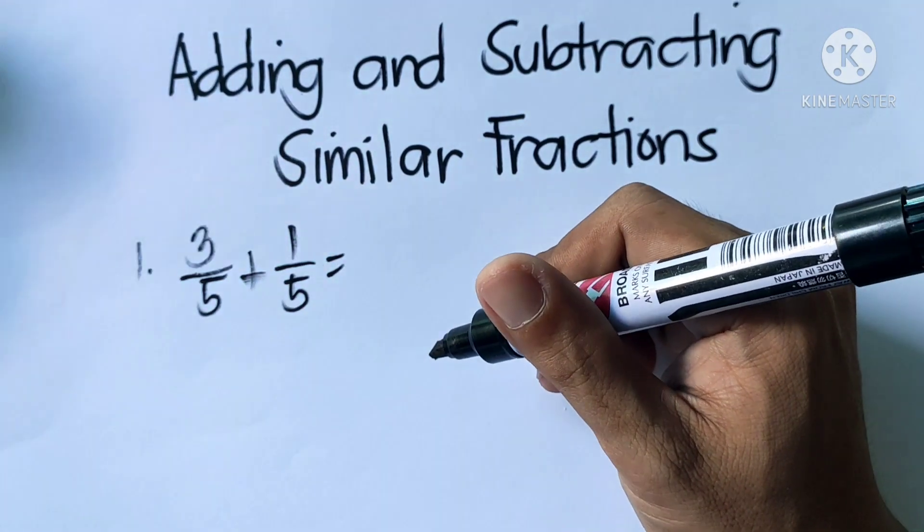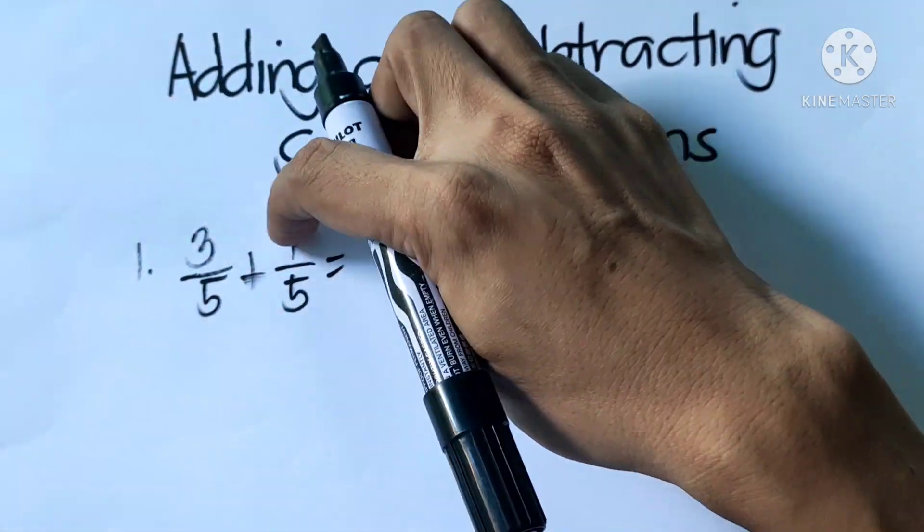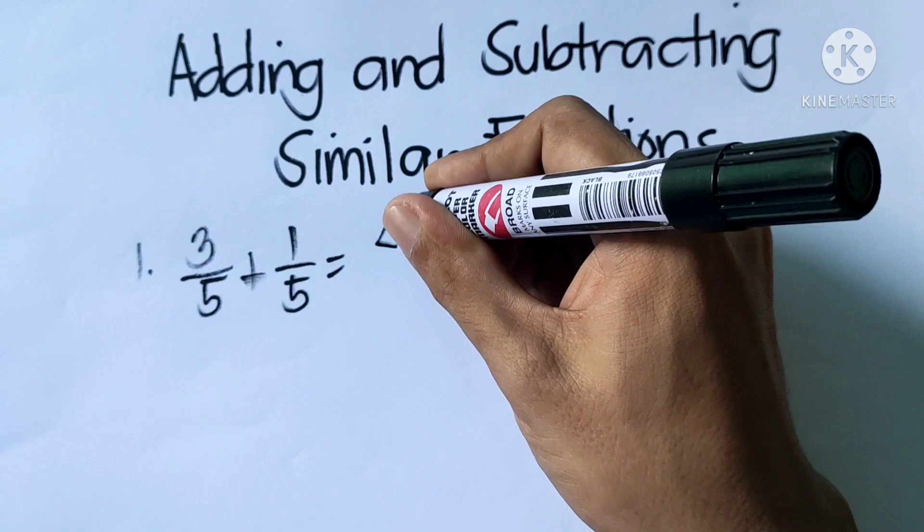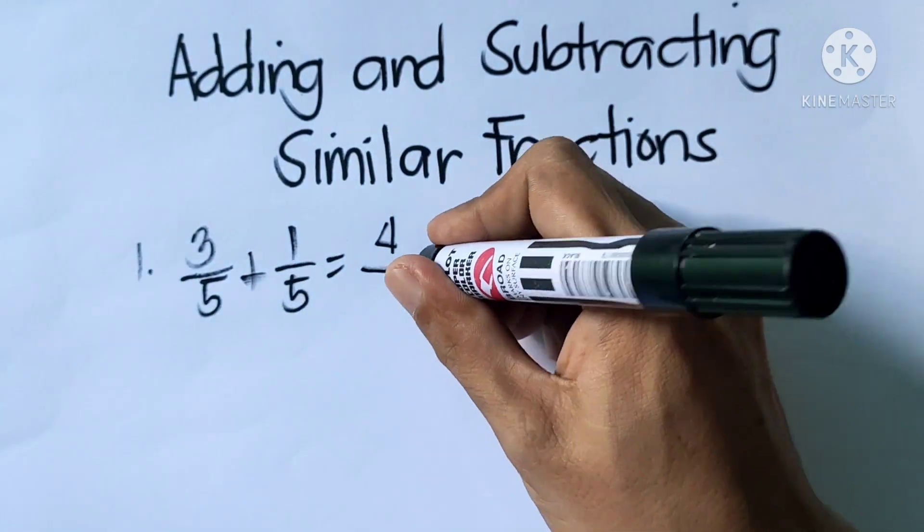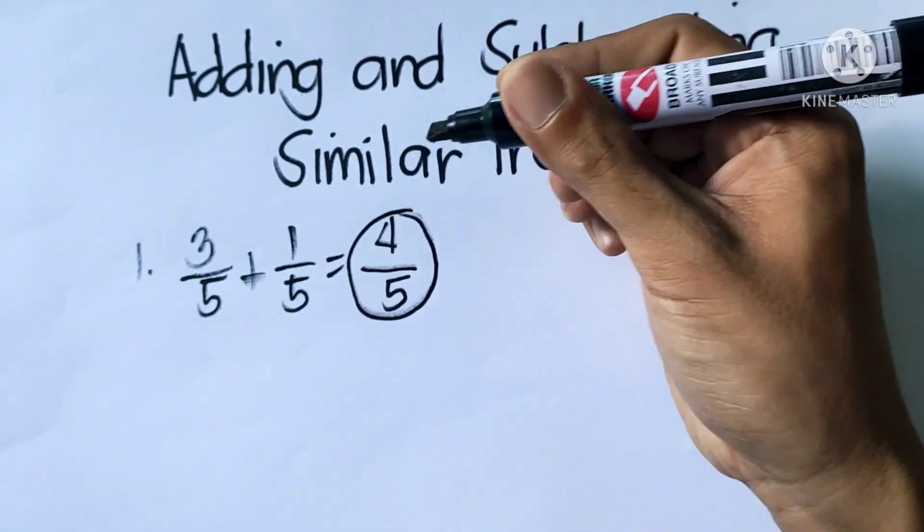To add similar fractions, simply add the numerators. So 3 plus 1 is 4. Then copy the denominator, which is 5. So the answer is 4 over 5.